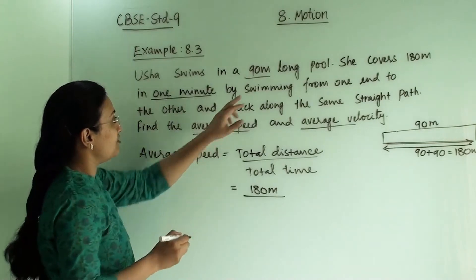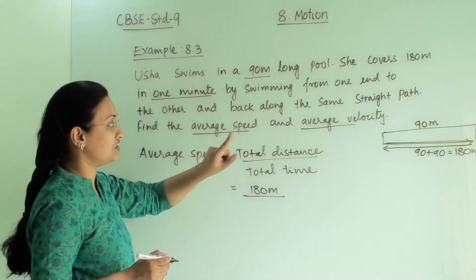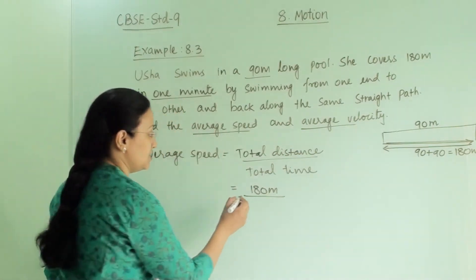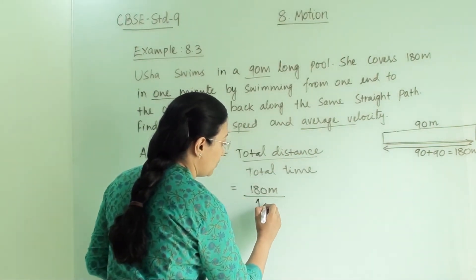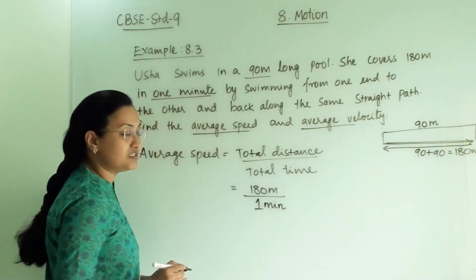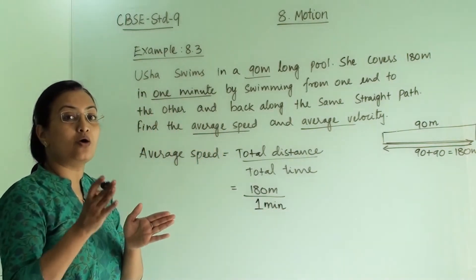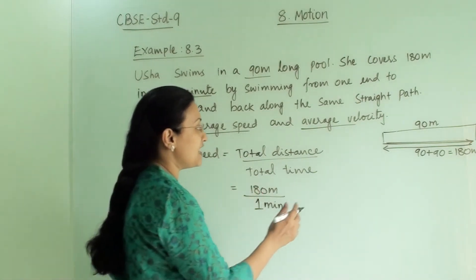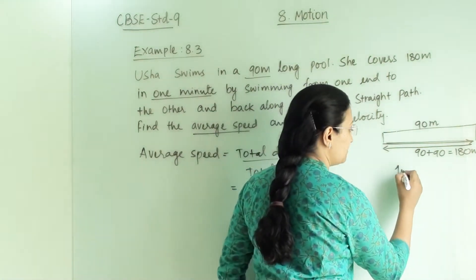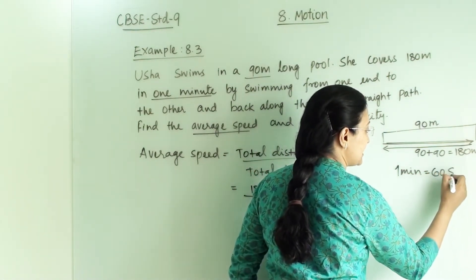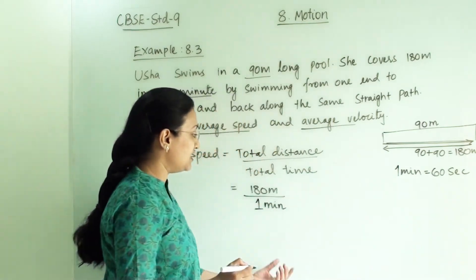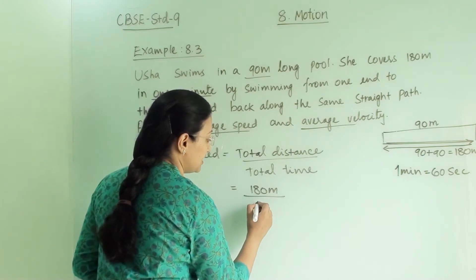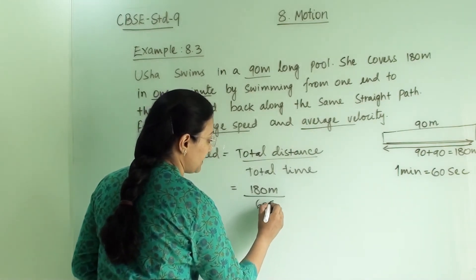They have not given for one journey, they have given for the complete journey, once she starts and comes back. She did this in one minute. But meter always goes with second, so we have to convert this minute into seconds. One minute equals to 60 seconds.